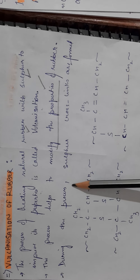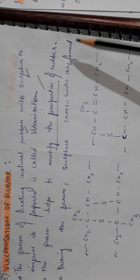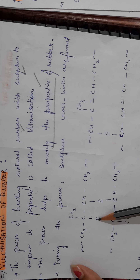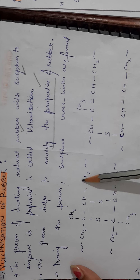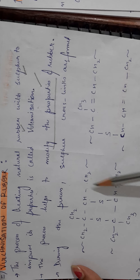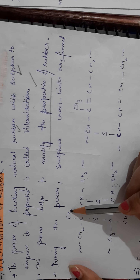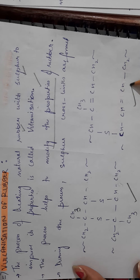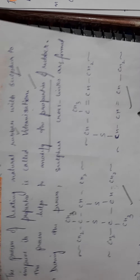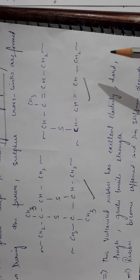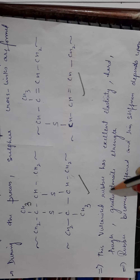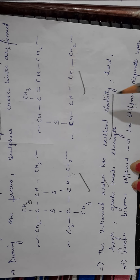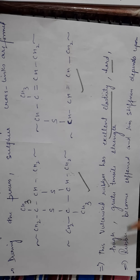During vulcanization, sulfur forms cross-links between the polyisoprene chains. This sulfur bridging between two isoprene structures creates a cross-linked network, which is how sulfur cross-linking works in the vulcanization process.